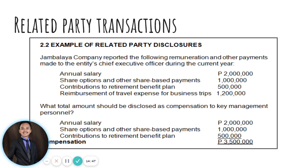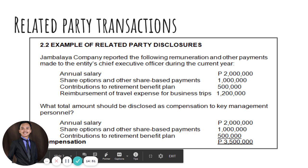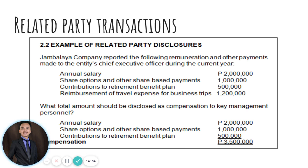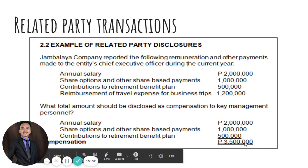Key management personnel compensation is required to be disclosed as stated in PAS 24, paragraph 16, which requires an entity to disclose key management personnel compensation in total and for each of the following categories: short-term employee benefits, post-employment benefits such as retirement pensions, other long-term benefits, termination benefits, and share-based transactions like share options. In this case, Hambalaya Company is required to report $3.5 million as a related party disclosure, particularly for its key management personnel.